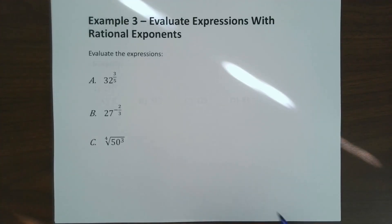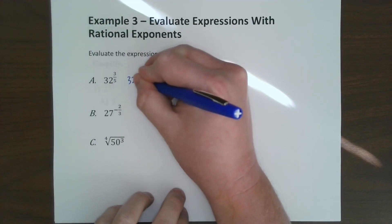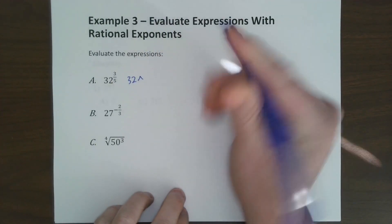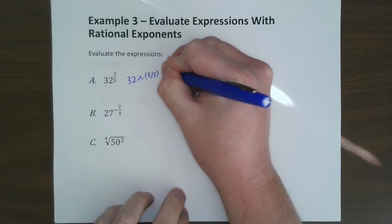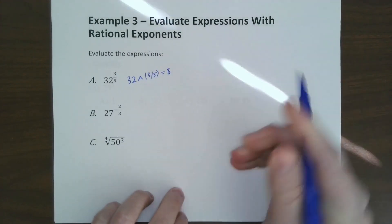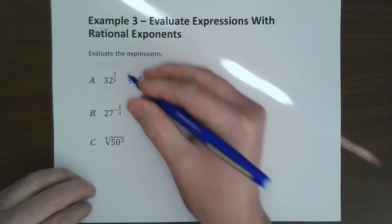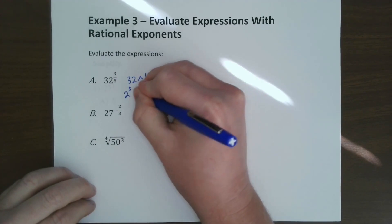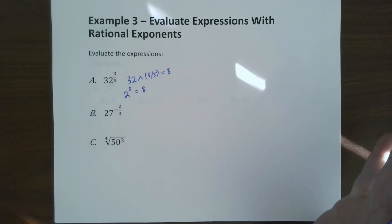How do we evaluate these things? You can just type it in the calculator. For example, if you type this in the calculator, you go 32 with the little caret or exponent function, and do 3 divided by 5, and it will give you 8. But if you think about it differently, what's the fifth root of 32? It's 2. What's 2 to the third power? 8. That would be exactly the same thing.